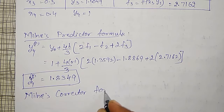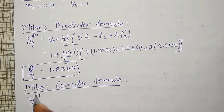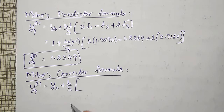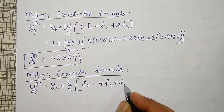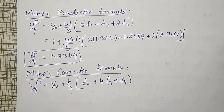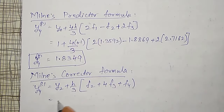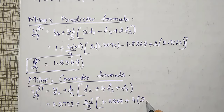The corrector formula is: y4 corrector is equal to y2 plus h by 3 into f2 plus 4 times f3 plus f4. My y2 value is 1.2773, plus h value is 0.1 divided by 3, into f2: 1.8869, plus 4 times f3: 2.7162, plus f4.